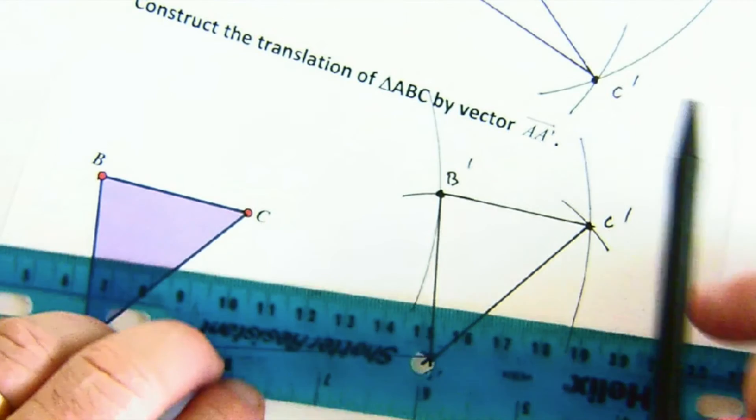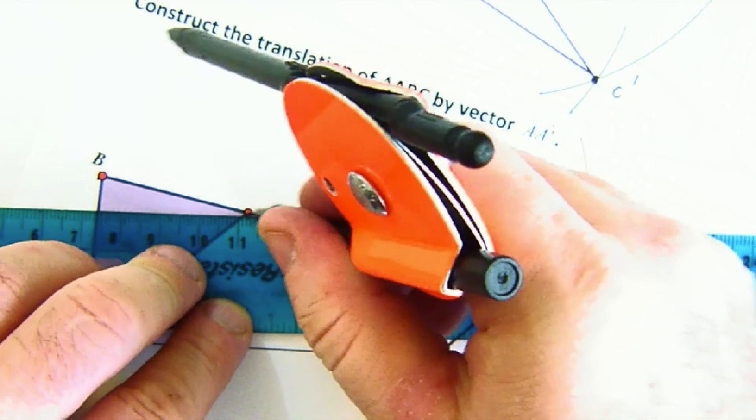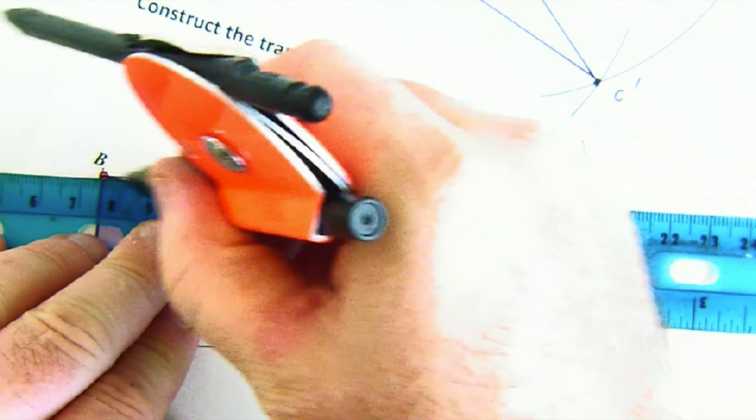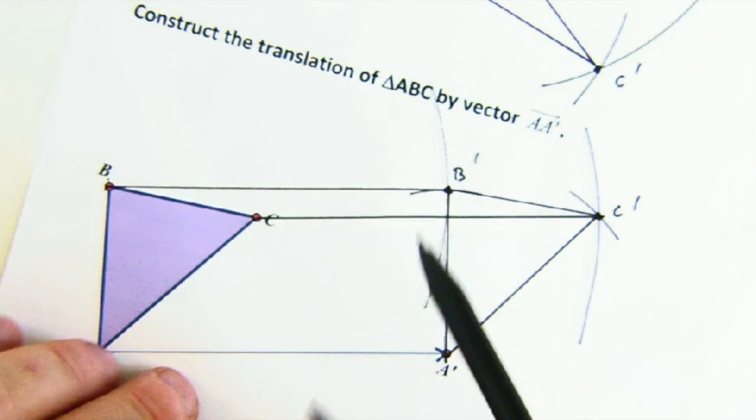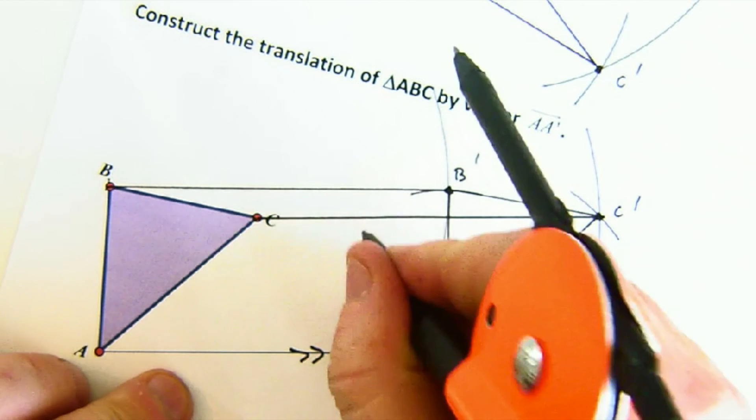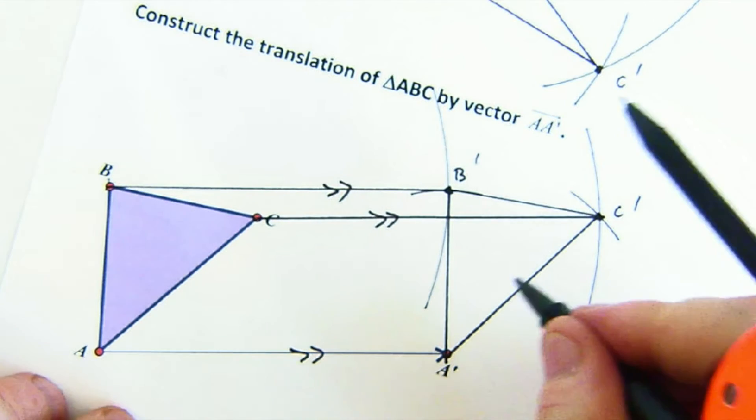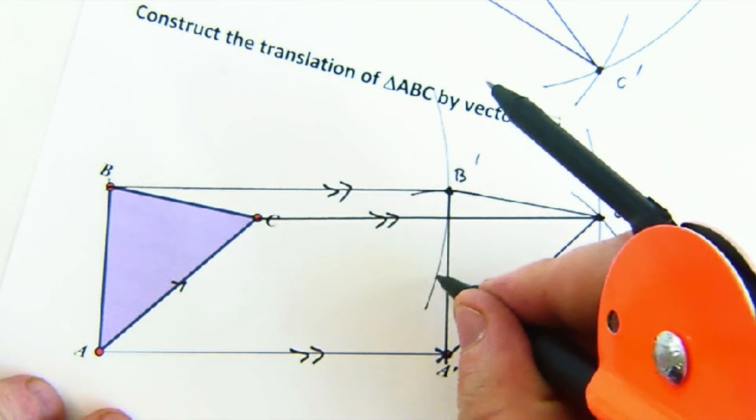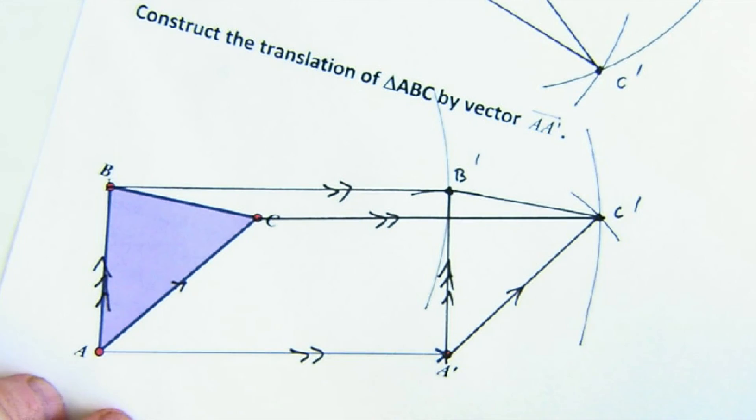What's beautiful about this is if I connect C to C', and B to B', we get parallel lines. Of course we get that because they are a vector. We get parallel lines going between the original and its images. So these are parallel. There it is. That's awesome.